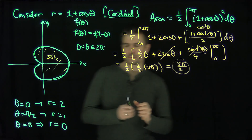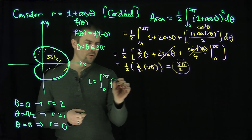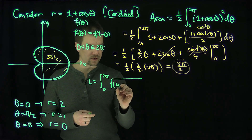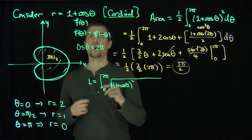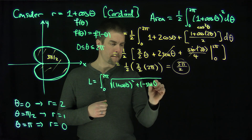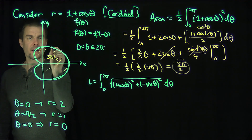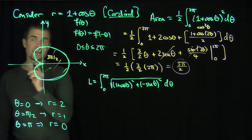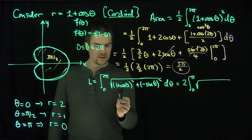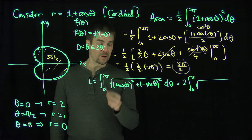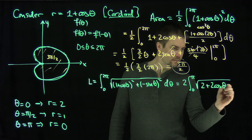The arc length is the integral from zero to two pi of the square root of r squared plus r-prime squared d theta. Here r equals 1 plus cosine theta and r-prime equals negative sine theta. By symmetry, this equals twice the integral from zero to pi of the square root of (1 plus cosine theta) squared plus sine squared theta d theta, which simplifies to twice the integral of the square root of two plus two cosine theta d theta.